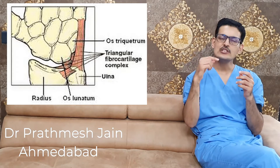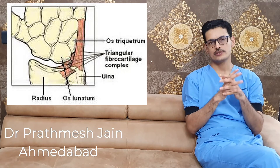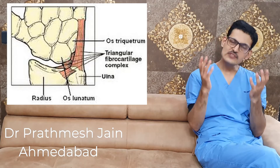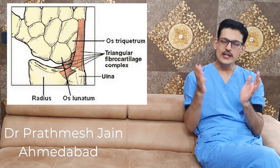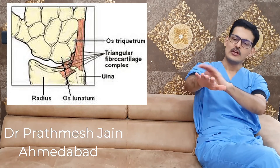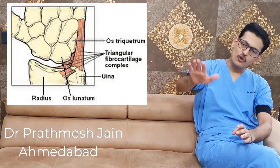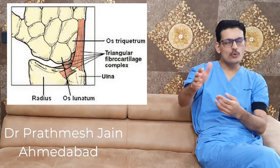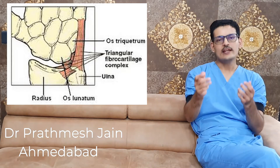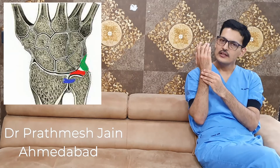As discussed, the mechanism of injury is usually a fall on the extended wrist. If your wrist is extended and you fall with the forearm in pronation, you have a chance of injuring your TFCC disc.